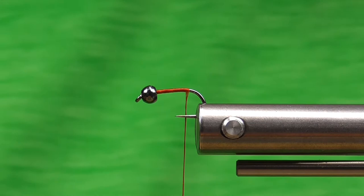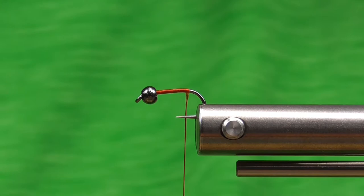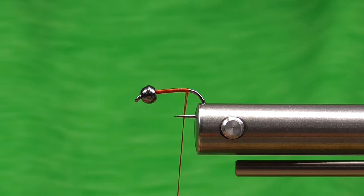This is a size 12, 2X nip hook with a 3.3 millimeter tungsten black nickel bead. The thread I'm using, I am stepping up the size of that. I think that's important because it's not going to cut through the squirmy material as easily.